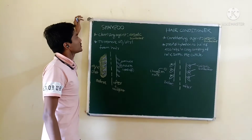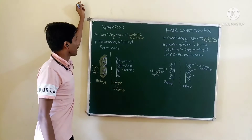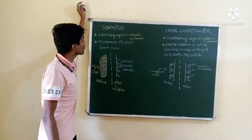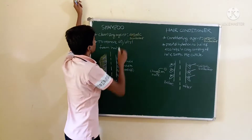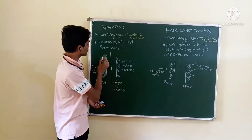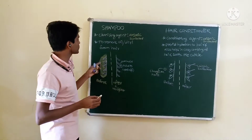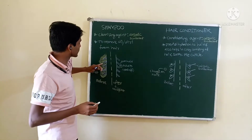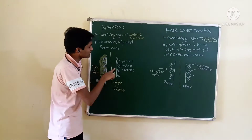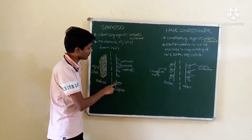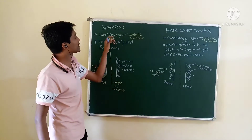The topic is shampoo and hair conditioner. In shampoo, we can clean the hair. These are the dirt particles. We are cleaning this — you can see here the dirt particles are there. After the cleaning, we are using a cleansing agent.